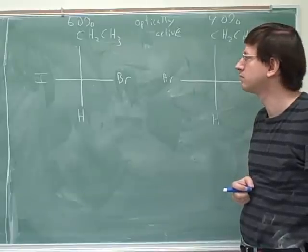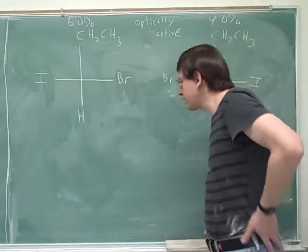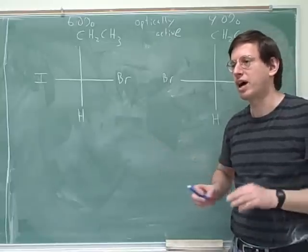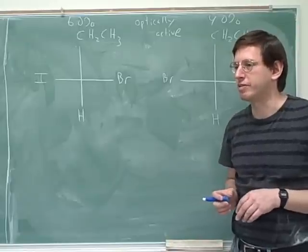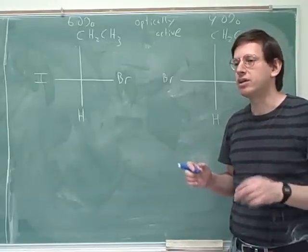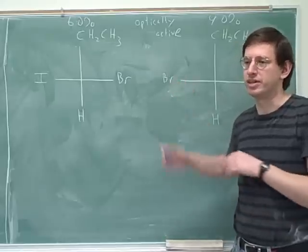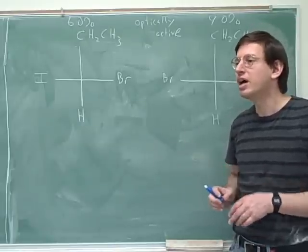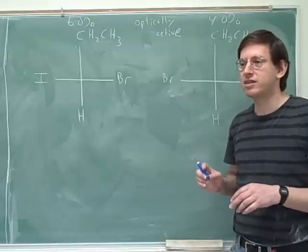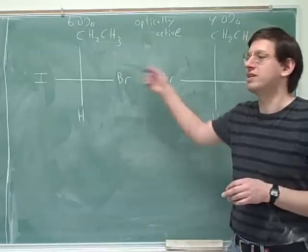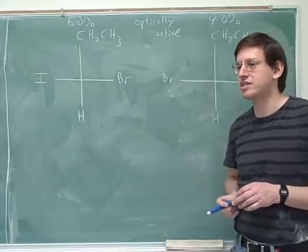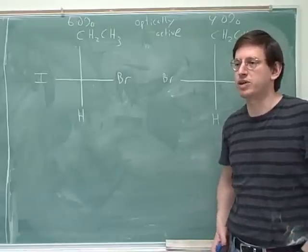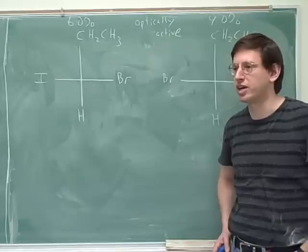Would it be negative rotation? Negative and positive refer to whether the light is rotated clockwise or counterclockwise. A plus sign means clockwise rotation; a negative sign means counterclockwise rotation. You cannot tell what the direction of rotation is by looking at the structure — that's an experimental fact. You can only tell by doing the experiment in the lab. Plus and minus has nothing to do with R and S. We can tell which of these is R and which is S, but that has nothing to do with how they rotate the light. That's a common trap on exams, so it's important to watch out for that.